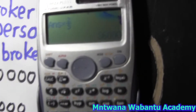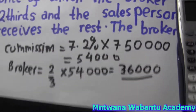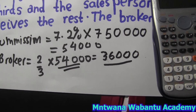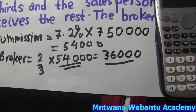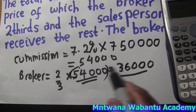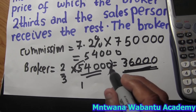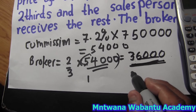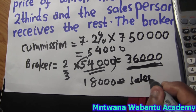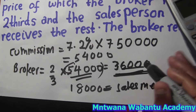The salesman is going to get the remainder. From the total commission, subtract the broker's amount and the salesman gets R1,800. So R1,800 is the salesman's commission and R3,600 is the broker's commission.